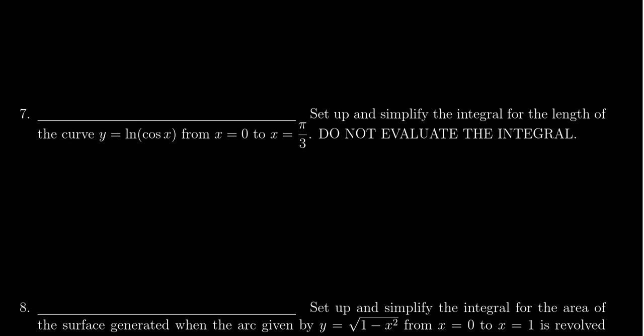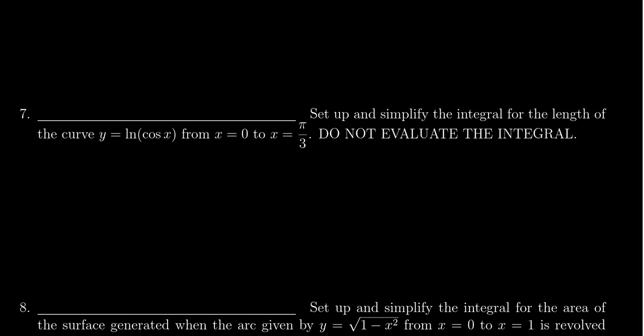In this video, we provide the solution to question number seven for practice exam number two for Math 1220, in which case we have to set up but not evaluate the integral for the length y equals the natural log of cosine of x from x equals zero to x equals pi thirds. I should also mention we're supposed to set up and simplify it. Again, we don't have to evaluate, but we have to do some basic simplifications here.